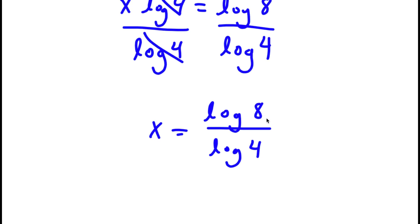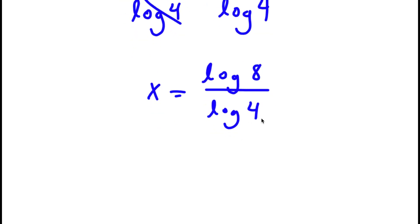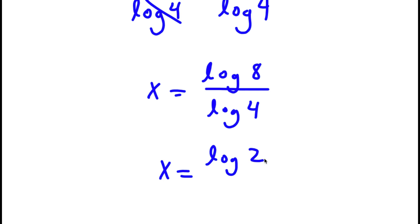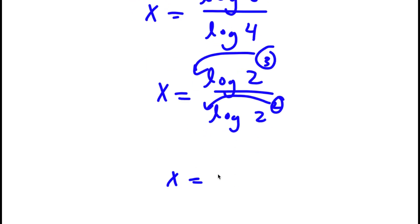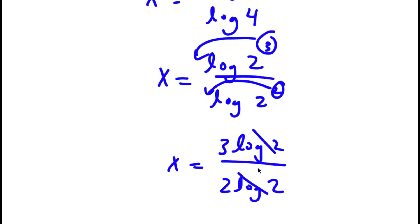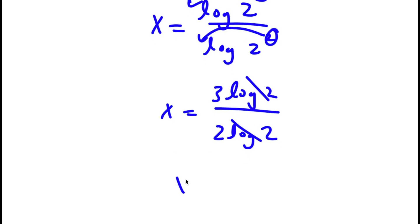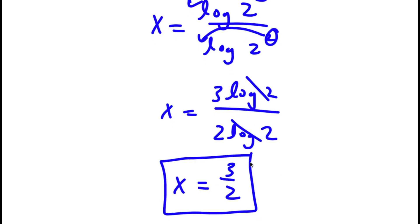Now, remember 8 equals 2 to the power of 3, and 4 equals 2 to the power of 2. So now I have log 2 to the power of 3 over log 2 to the power of 2. I can move these exponents to the front, so I have x is equal to 3 times log 2 over 2 times log 2. These two log 2s cancel out, so I'll simply be left with x is equal to 3 over 2. This is my answer.